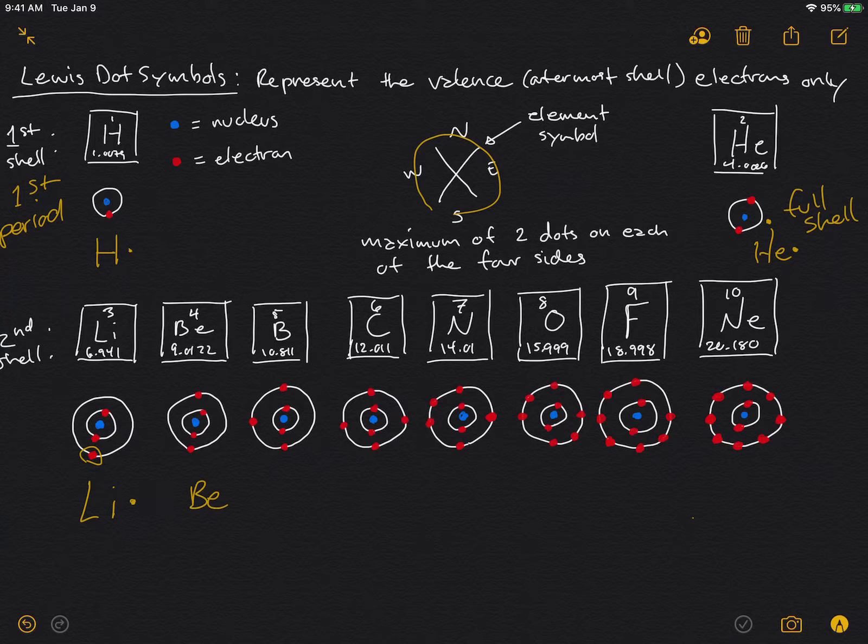Beryllium next has one more electron, and remember we don't count the closed shells. So beryllium has two electrons. Go over to boron. Now it's got three valence electrons in the second shell, so we add one more. Now we've got three dots, and then carbon has four. So we put one on each of the four sides.